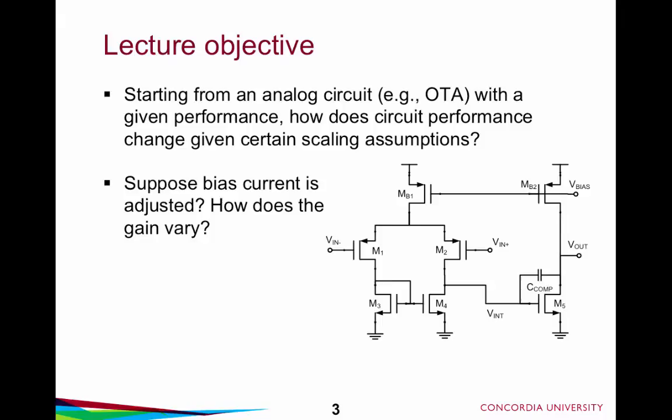The objective of this lecture is as follows: starting from an analog circuit with a given performance, how does circuit performance change given certain scaling assumptions? As an example, we have a two-stage op-amp. Let's say we've designed the circuit — it has a certain gain, a certain frequency response — and then we adjust the bias current by adjusting the V-bias knob. This will have a number of effects on small signal parameters, large signal behavior, and in turn will give rise to changes in gain and frequency response. We want to investigate this and make some fairly rapid statements about how these different changes affect performance.